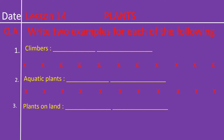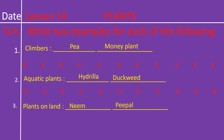Hope children, you all have written the answers. Now it is time for checking. Number one — climbers: pea, spelling P-E-A; money plant, spelling M-O-N-E-Y P-L-A-N-T. Number two — aquatic plants: hydrilla, spelling H-Y-D-R-I-L-L-A; and duckweed, spelling D-U-C-K-W-E-E-D. Number three — plants on land: neem, spelling N-E-E-M; and peepal, spelling P-E-E-P-A-L.